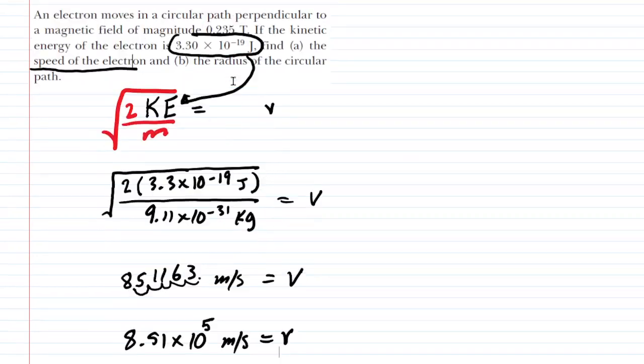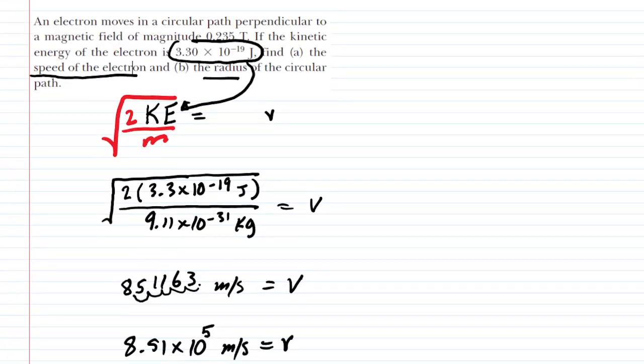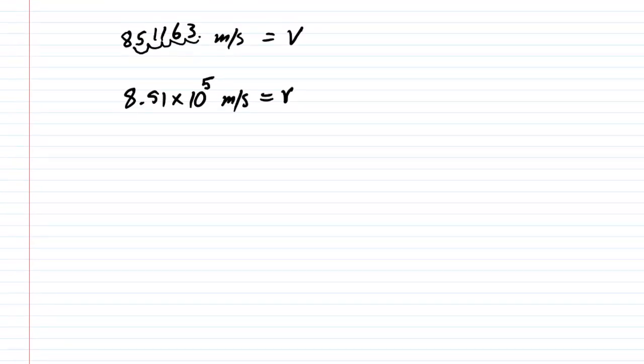In part b we need to determine the radius of the circular path. It turns out that if a charged particle is fired perpendicularly into a magnetic field, then the following equation applies.